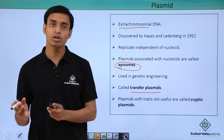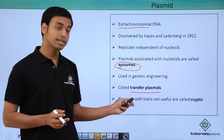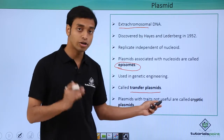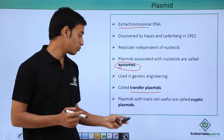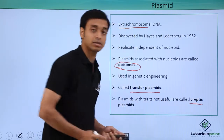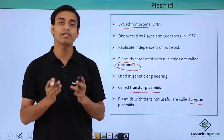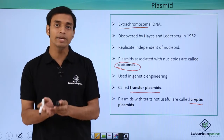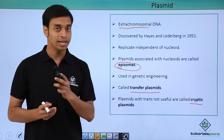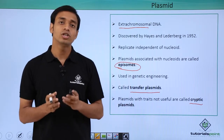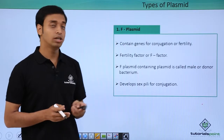If plasmids have traits that are not actually very useful to a particular bacterial cell, these types of plasmids are known as cryptic plasmids. So plasmids may be of two broad types: some may have very important functional genes that help in important functions of the bacterial cell, and some may be cryptic plasmids, which do not provide any important function to the cell.